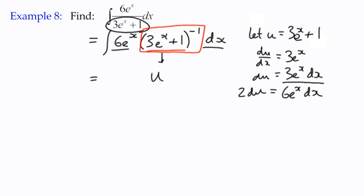So let's do that. We're going to substitute u for (3e^x + 1) to the power negative one, and the rest of it, the 6e^x dx, we're going to replace with 2du.